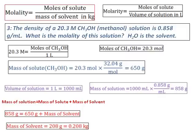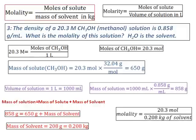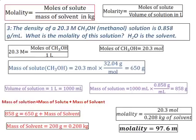In molality, the mass of solvent should be in kilograms. Convert 208 grams into 0.208 kilograms. Now I have everything needed to calculate molality: moles equals 20.3 and mass of solvent equals 0.208 kilograms. Hence molality equals 97.6 m. This is a special question in which molarity is given and you are asked to calculate the molality of the solution.